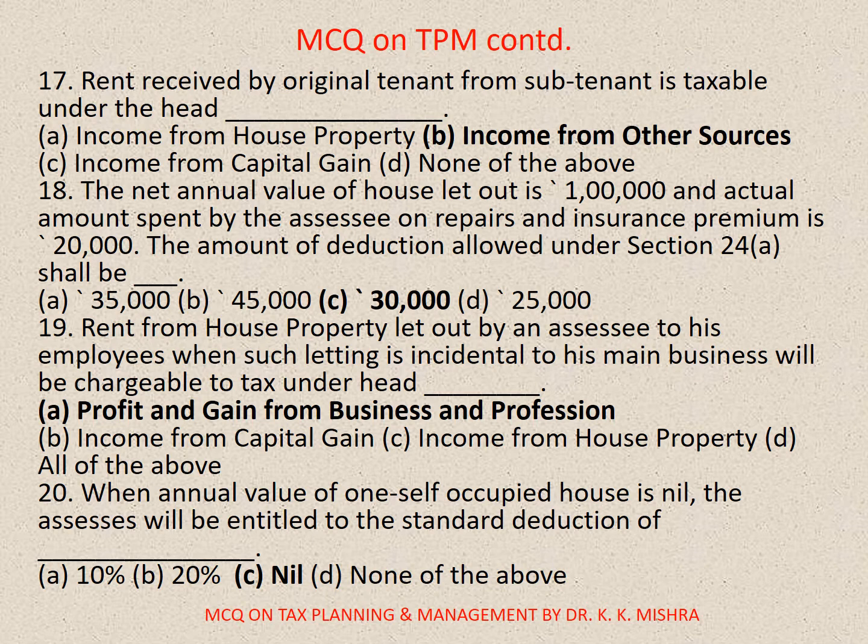Question number 18: The net annual value of a house that is let out is 1,00,000 and the actual amount spent by the assessee on repairs and insurance premium is 20,000. The amount of deduction allowed under Section 24 clause (a) shall be — correct option is C: 30,000.